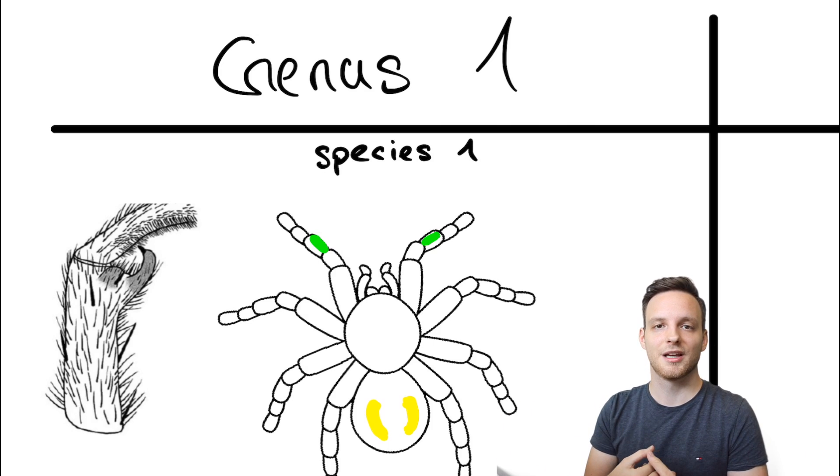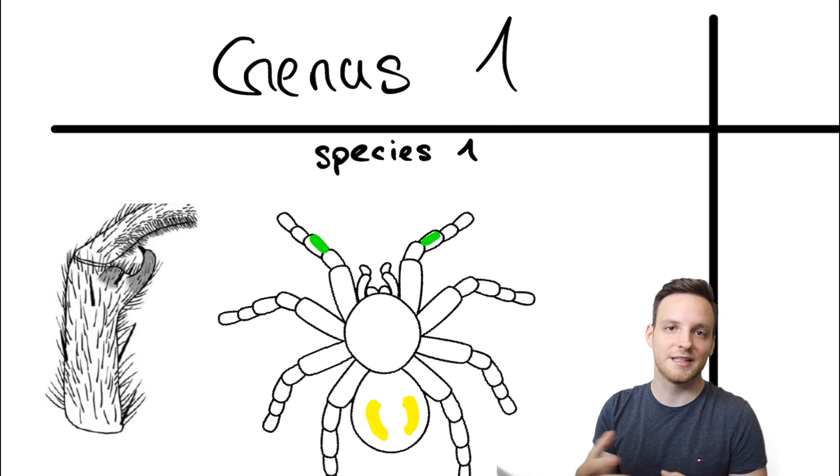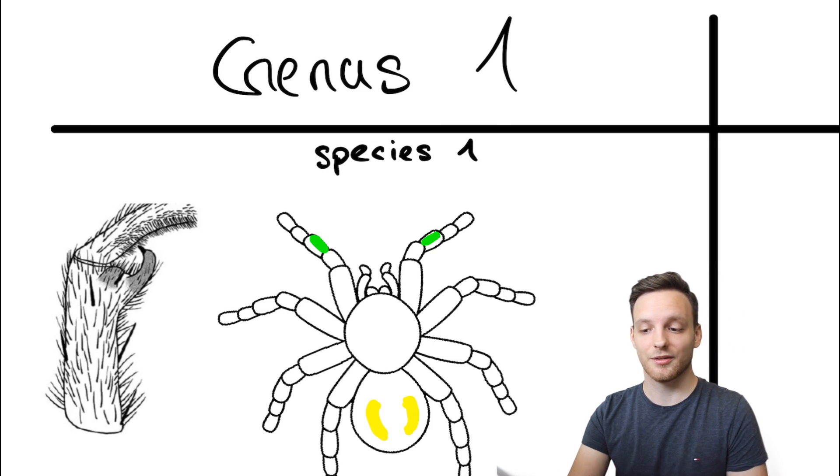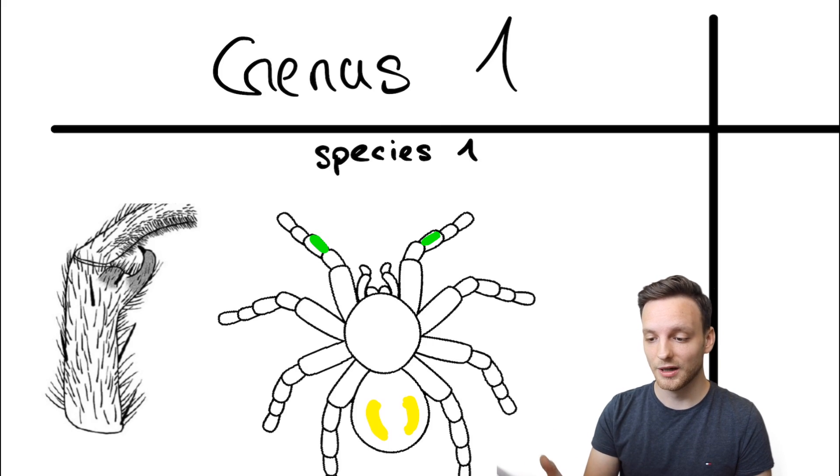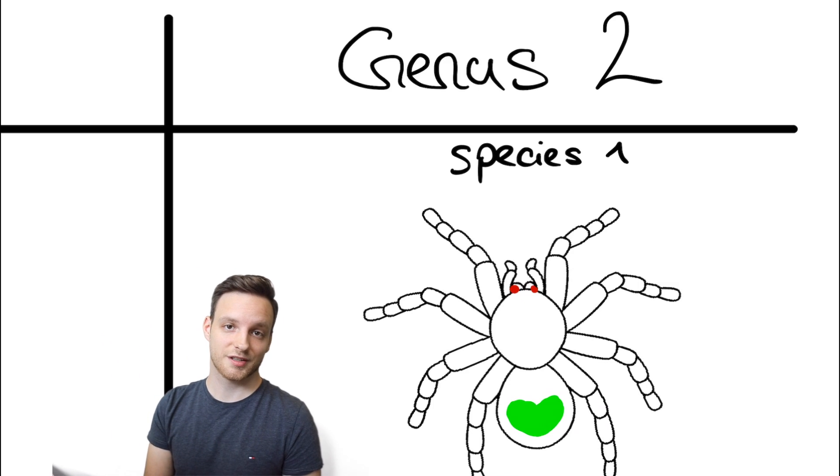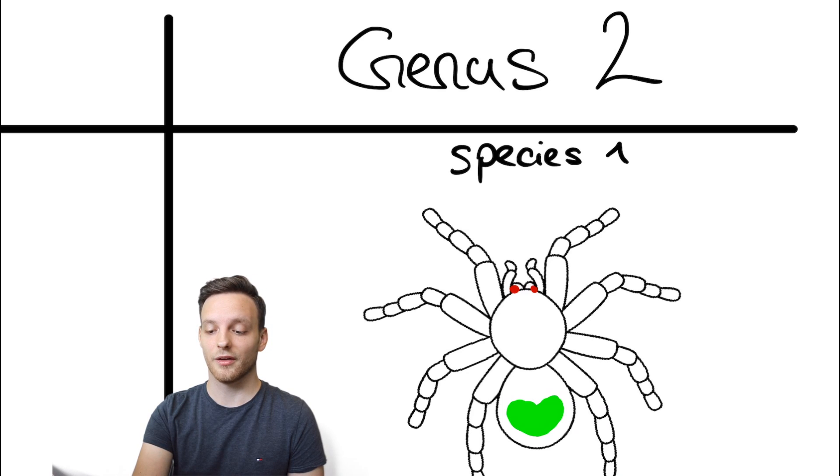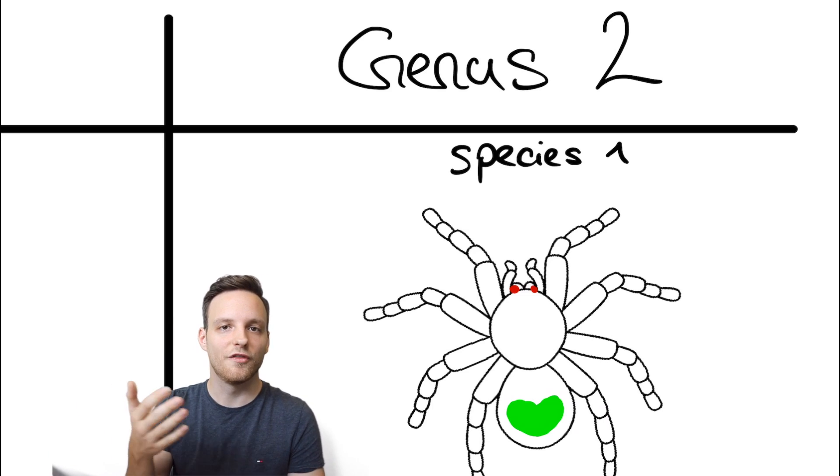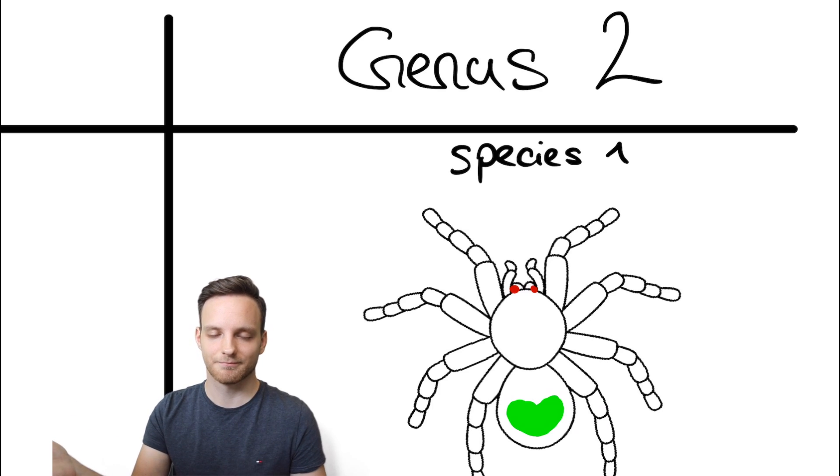In the end it all summarizes to the fact that a genus is nothing more than shared traits which leads to a possible common ancestor. When you go on the right side we have established a genus number two. This one has this green field of urticating hair patches on the opistosoma and has two dots on the fangs left and right. That means each and every species who has these two features needs to be within genus two. Easy.